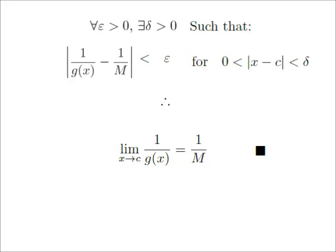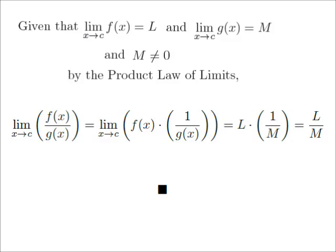This proves that given that the limit as x approaches c of g of x is m, and m is not 0, the limit as x approaches c of 1 over g of x is 1 over m. We can then use the product law of limits to say that given that the limit as x approaches c of f of x is l, and that the limit as x approaches c of g of x is m, and that m is not 0, the limit as x approaches c of f of x over g of x is l over m.